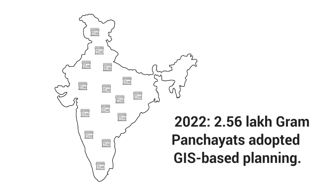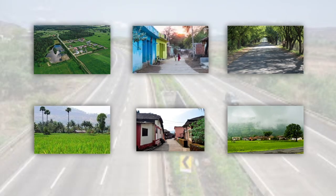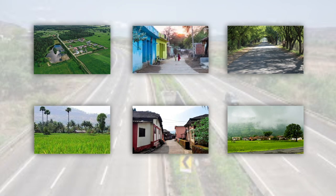Following the success of the pilot phase, by 2022, GIS-based planning had expanded to 2.56 lakh Gram Panchayats across India, demonstrating the potential of technology to drive large-scale rural transformation.